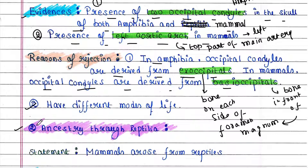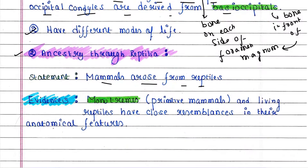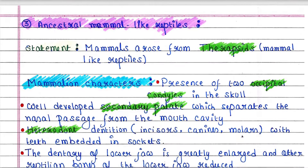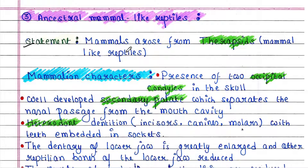The next theory was ancestry through Reptilia. It was stated that mammals arose from reptiles. Monotremes were the primitive mammals, and these monotremes and living reptiles have some close resemblances in their anatomical features. More specifically, the statement was that mammals arose from theropsids, which are mammal-like reptiles.